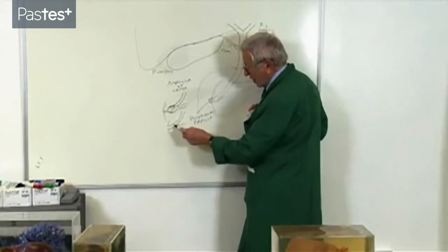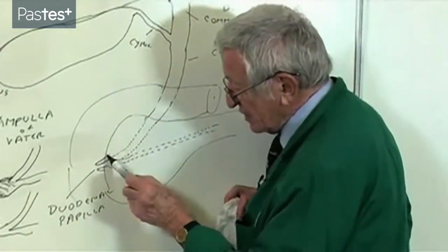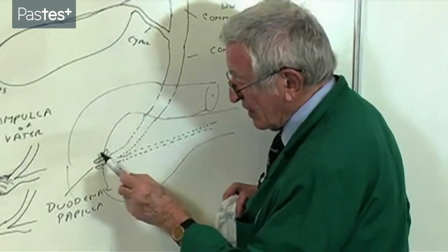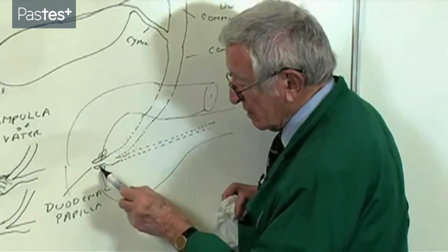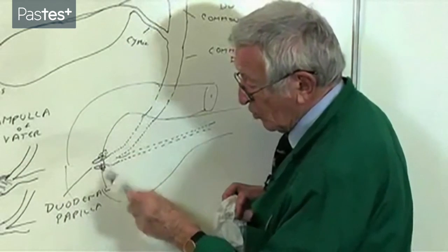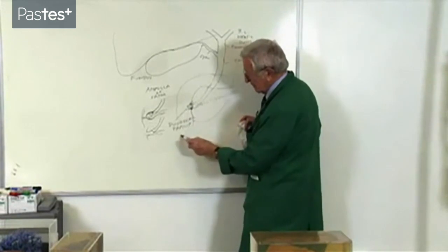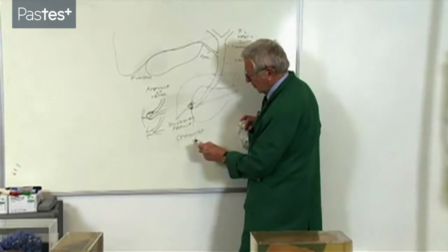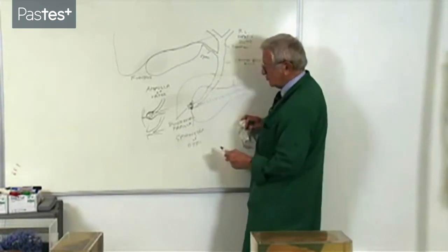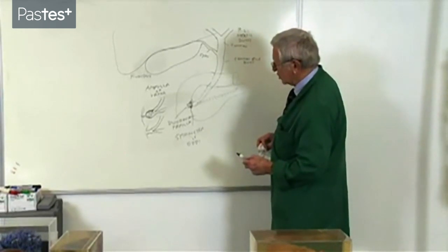However, everybody says there's a stone jammed at the ampulla of Vater. You'll hear people use that term. Interestingly enough, there's a very distinct sphincter of involuntary muscle surrounding the common opening of the pancreatic duct and the bile duct. The sphincter of Oddi, you'll hear that term used. That's a very definite structure that you can see in a careful dissection.